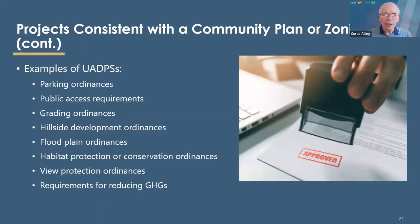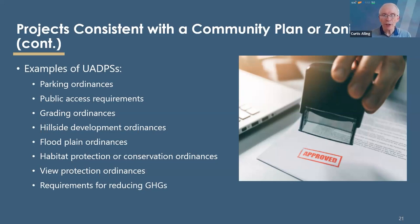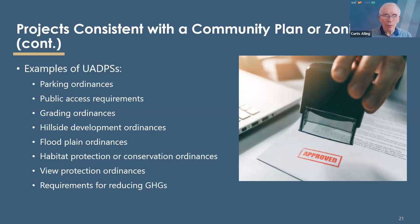Here are examples of uniformly applied development policies or standards from the guidelines. We're talking about development standards or design standards like hillside development or grading ordinances, or standardized environmental protection features like habitat protection, view protection, or floodplain ordinances. The list, except for greenhouse gas, has been around for a long time. Greenhouse gas reduction requirements that are uniformly applied were added in an amendment later to the guidelines. So that's another one that can be applied. This is a very powerful, very available tool to use.